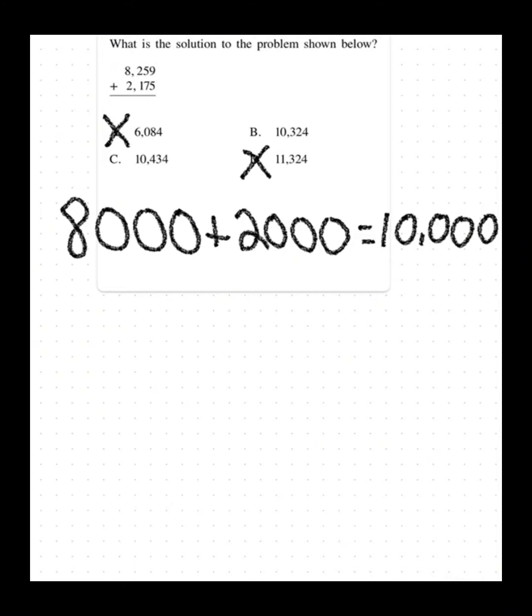So now that I've eliminated two of my choices, I'm going to solve this problem with the standard algorithm. So 8,259 plus 2,175.